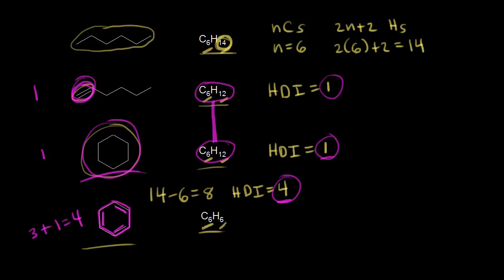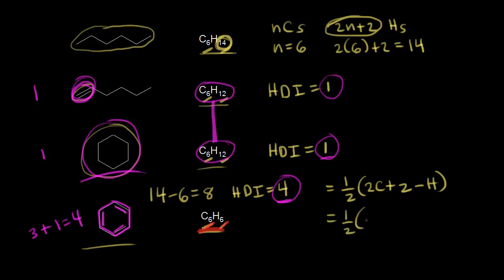We can also calculate the HDI using a formula: the hydrogen deficiency index is equal to one half times the quantity two times the number of carbons plus two, minus the number of hydrogens. For benzene with six carbons and six hydrogens, we plug in: one half times (two times six plus two minus six). Two times six plus two is 14; 14 minus six is eight; times one half gives us an HDI equal to four.